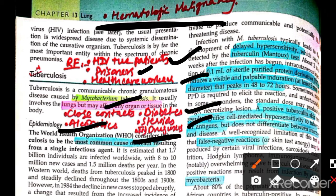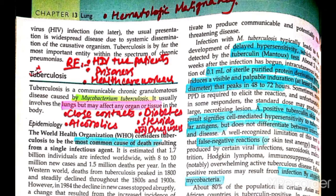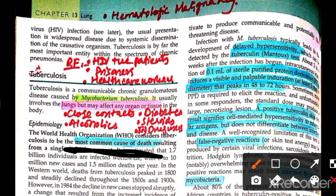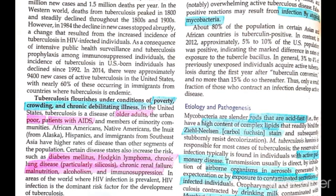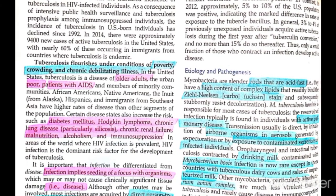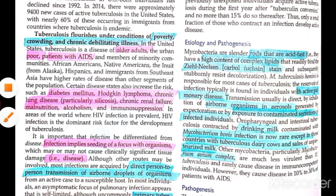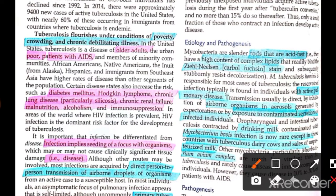There are some risk factors you should know. TB is considered the most common cause of death globally. Poverty plays a very important role, as many people living in poverty are affected by TB.